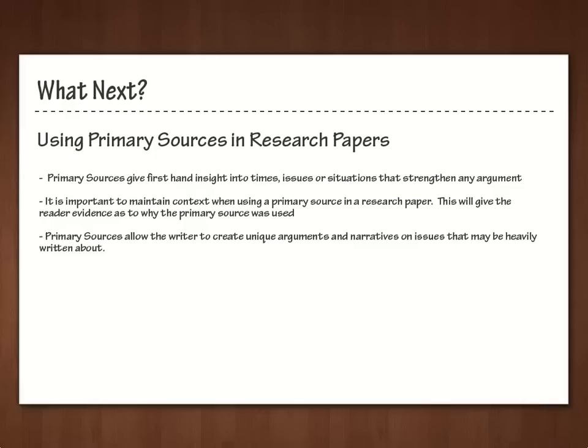Let's discuss why primary sources are so valuable to research papers. Primary sources give a first-hand insight into times, issues, or situations that will help strengthen your arguments. It is important to maintain context when using a primary source in a research paper, giving the reader evidence as to why that primary source was used and how it is important. Primary sources allow a writer to create unique arguments and narratives on issues that may have been heavily written about, creating your own unique perspective on a situation or argument. Thank you for participating in this walkthrough and I hope it was helpful.